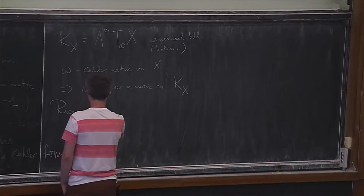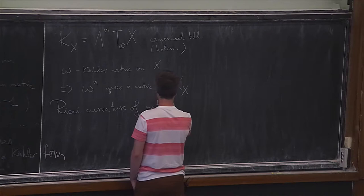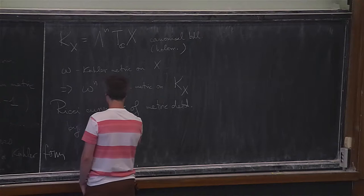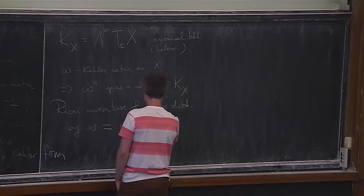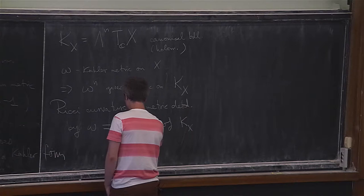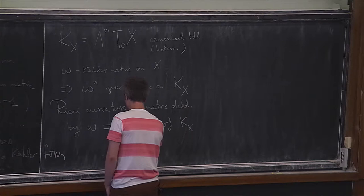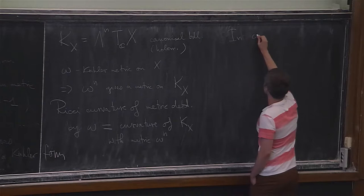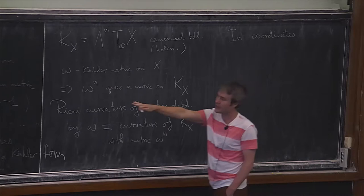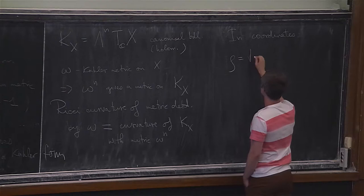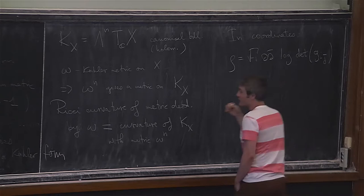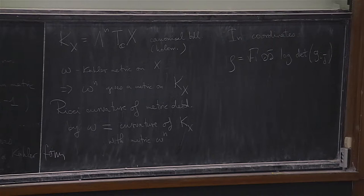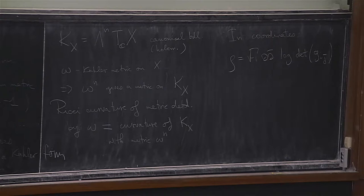The Ricci curvature of the metric determined by omega is equal to the curvature of K_X with the metric omega^n. In coordinates, rho equals sqrt{-1} d d-bar of log of the determinant of g_{i\bar{j}}. You take this n-by-n matrix, take its determinant — which is a positive real number — take the log, take the Laplacian, and this is the curvature.